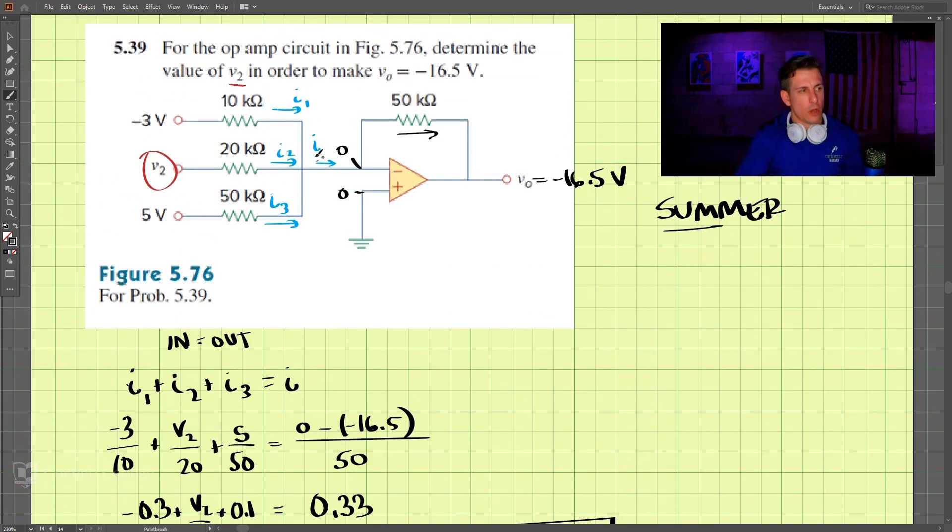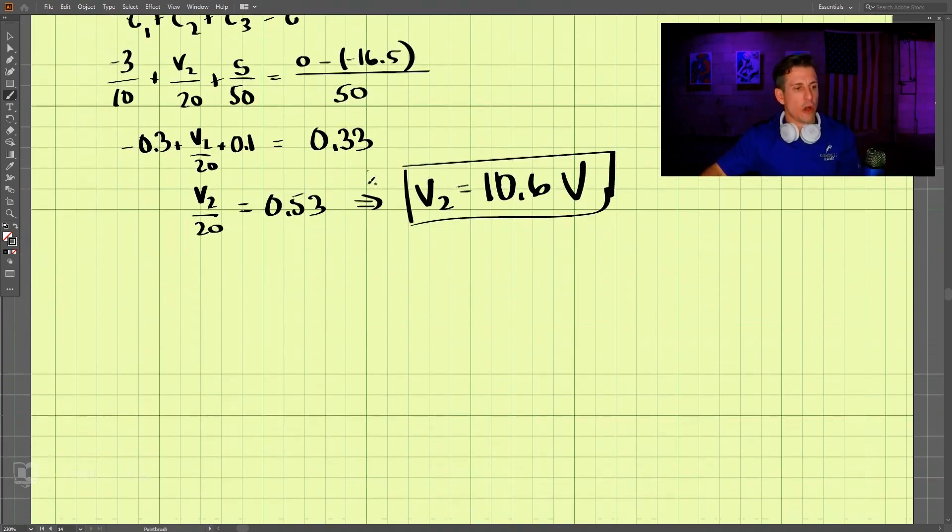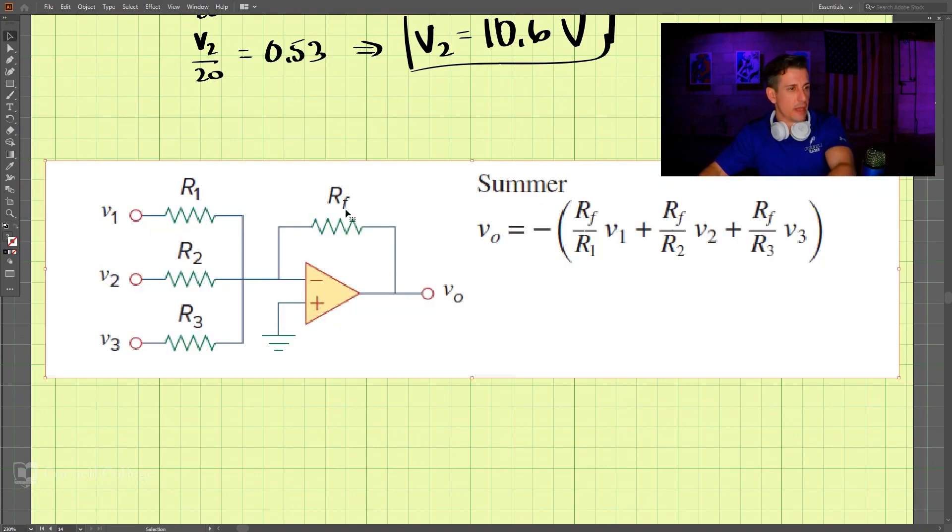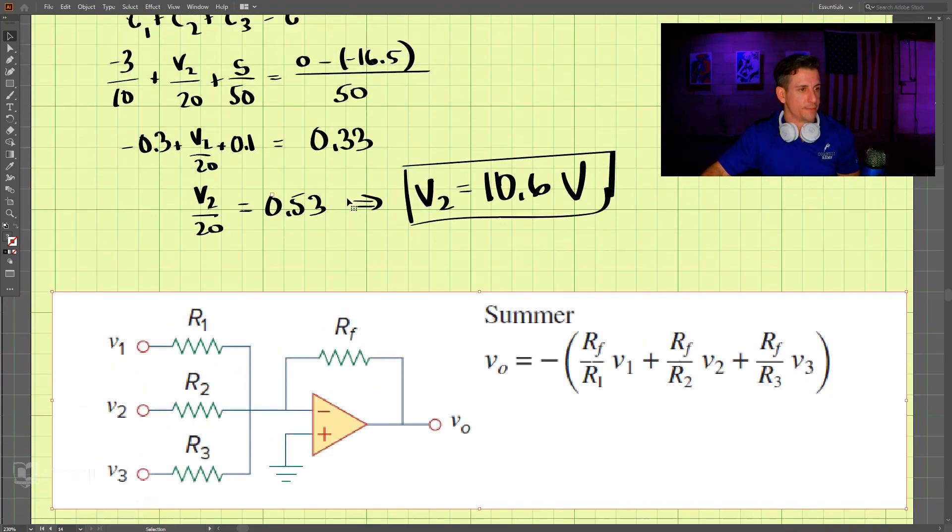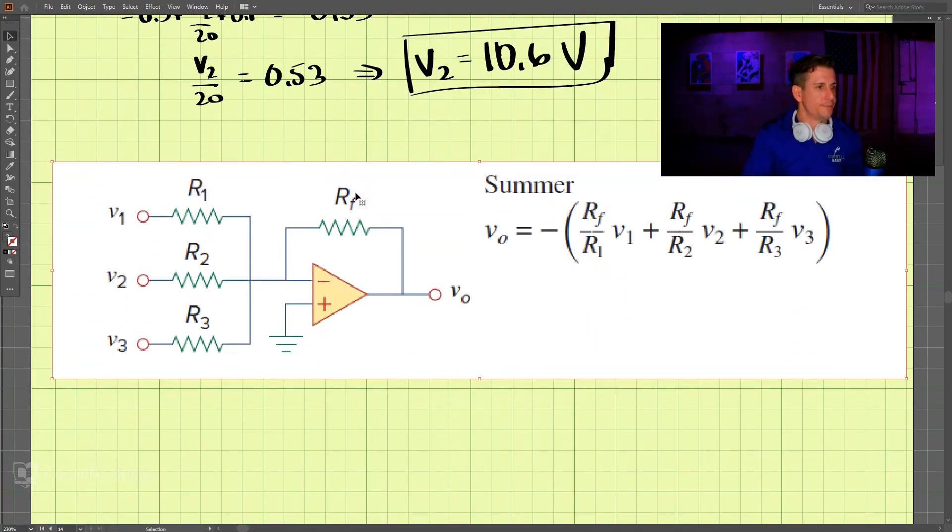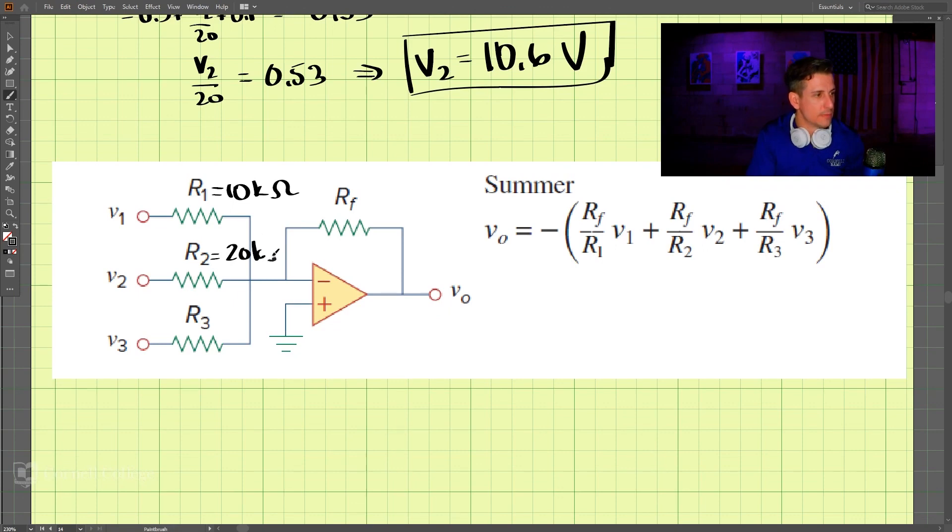Now, this is the way we did it, but we also have a formula that we can use to solve this. And we have this as a summer, the summing resistance, where we have 10, 20, and 50. So R1 is 10 kiloohms, R2 is 20 kiloohms, and R3 is 50 kiloohms, and V1 was negative 3, we were solving for V2, and V3 was 5 volts, and Rf is 50 kiloohms.